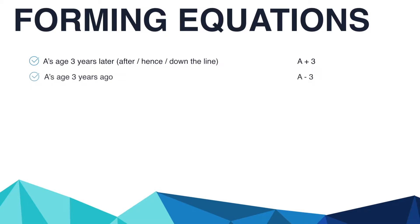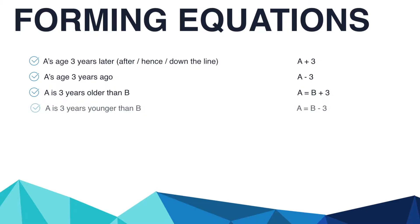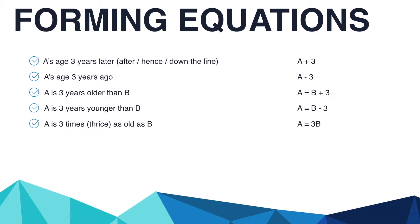A's age 3 years ago means A minus 3. A is 3 years older than B means A equals B plus 3. A is 3 years younger than B means A equals B minus 3. If A is 3 times or thrice as old as B, that means A equals 3 times B.